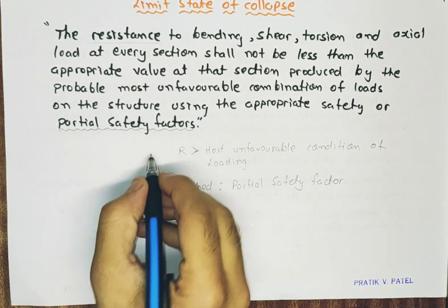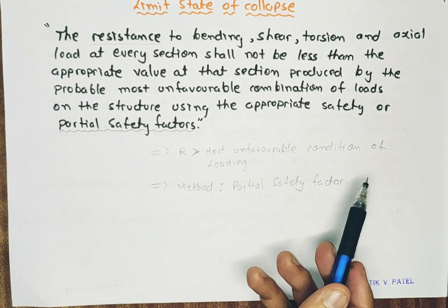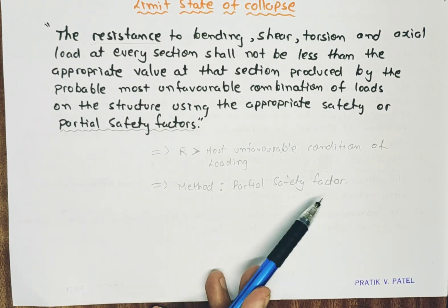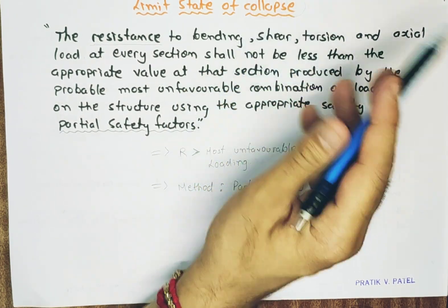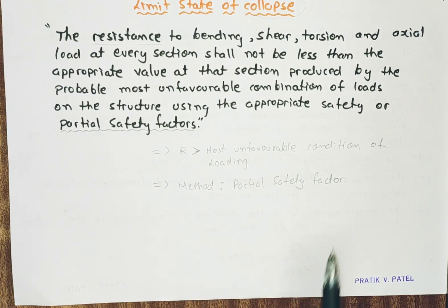So there are two key points we discussed. First, resistance must be greater than the most unfavorable conditions of loading. Second, we achieve this by increasing resistance using partial safety factors. The magnitude of the partial safety factor will be discussed later. But for now, when the word 'collapse' comes in the method of design, the concept of partial safety factor should immediately come to mind.